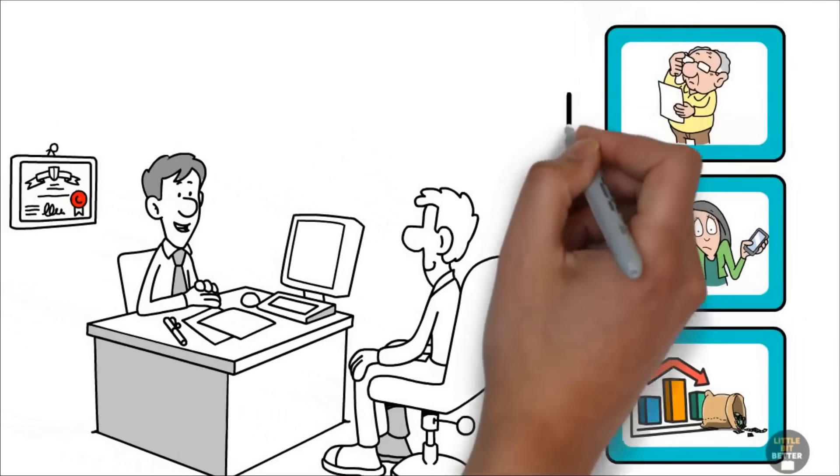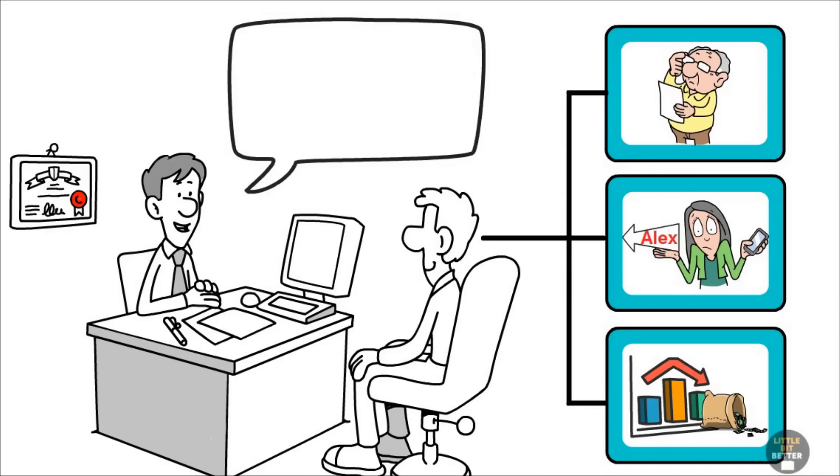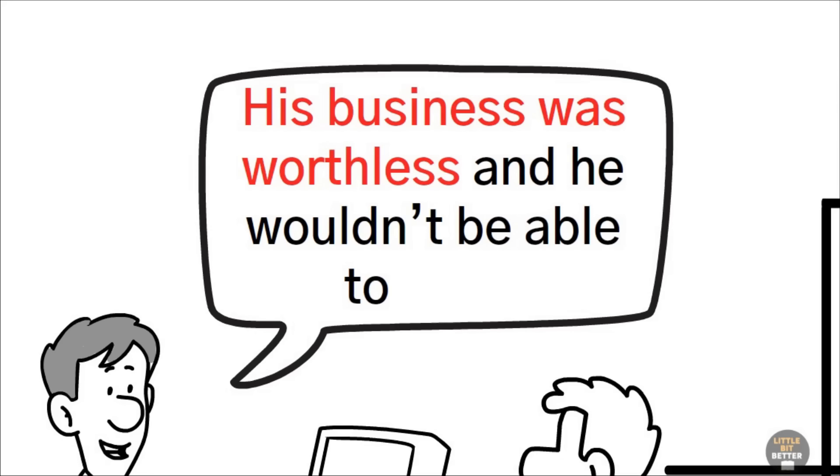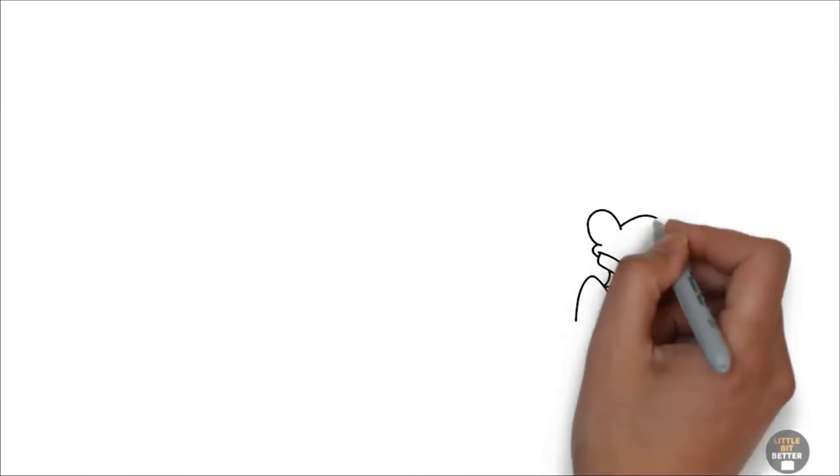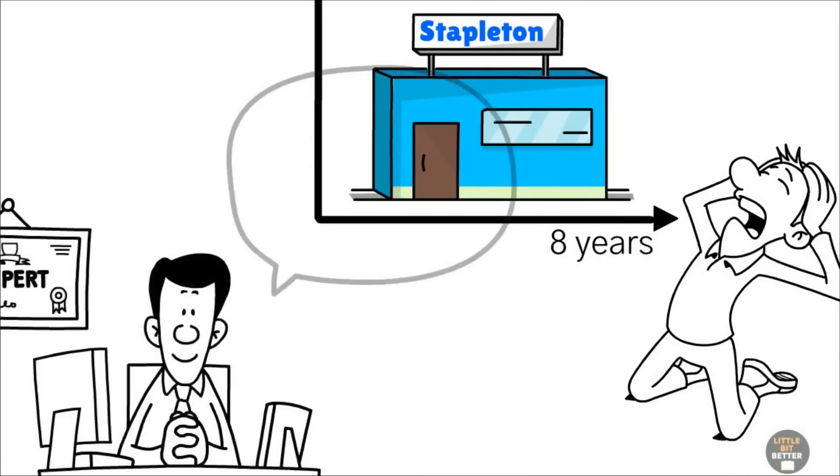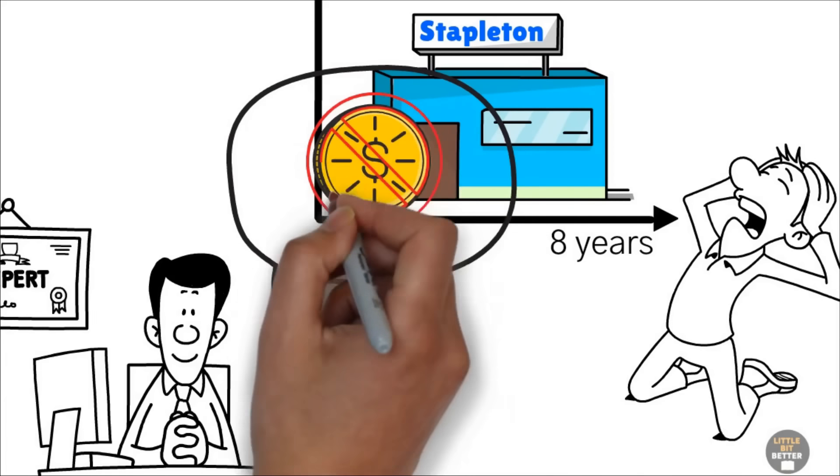Alex was shocked when he heard what Ted said next. Ted said that his business was worthless and he wouldn't be able to sell it. Alex was devastated. He'd spent eight years building Stapleton Agency, and now the man he most respected in the business told him it was worthless.